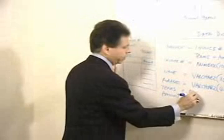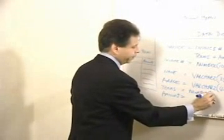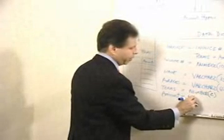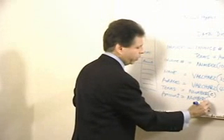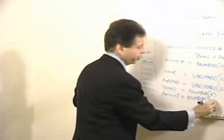Terms, suppose it's up to two digits. It's only two digits. An amount would be number, but it might have a decimal point. So we would define it as being, let's say, 5 comma 2,